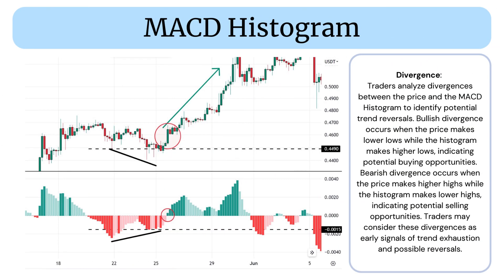Divergence: Traders analyze divergences between the price and the MCD Histogram to identify potential trend reversals. Bullish divergence occurs when the price makes lower lows while the histogram makes higher lows, indicating potential buying opportunities. Bearish divergence occurs when the price makes higher highs while the histogram makes lower highs, indicating potential selling opportunities. Traders may consider these divergences as early signals of trend exhaustion and possible reversals.